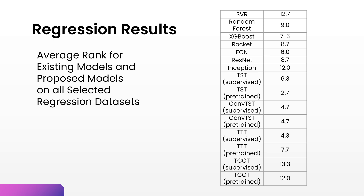By ranking the models for all selected datasets and getting the average rank for all models, it can be seen that the pre-trained base model performed the best with an average rank of 2.7. Supervised two-tower transformer comes in second with an average rank of 4.3, followed closely by both supervised and pre-trained Convo transformer with an average rank of 4.7. The mentioned proposed models perform better than existing models.